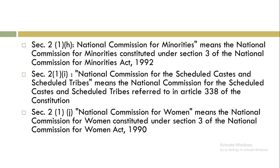From here, two or three exam questions can be framed. First, if asked what the National Commission for Minorities means, it is the commission described under Section 3 of the National Commission for Minorities Act 1992. The National Commission for Minorities is mentioned in Section 2(H) of the Protection of Human Rights Act. The National Commission for Minorities Act 1992 was enacted for the protection of human rights of minorities.